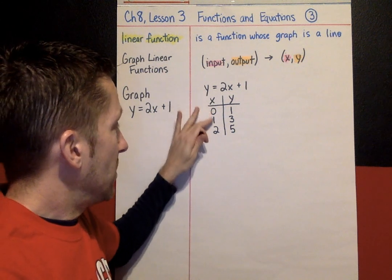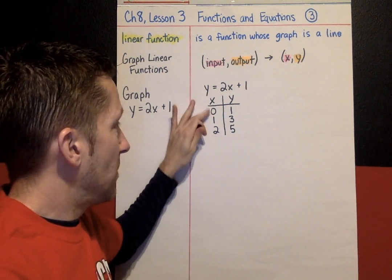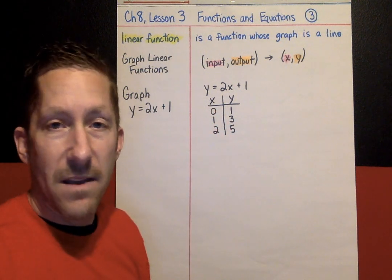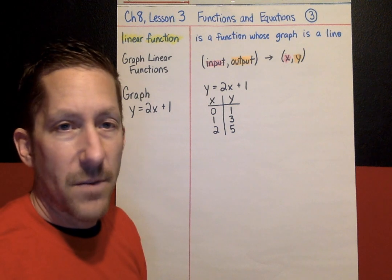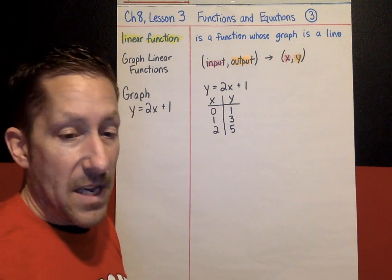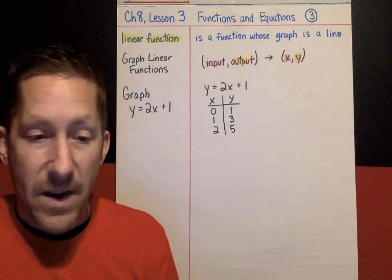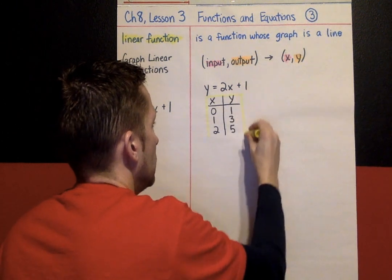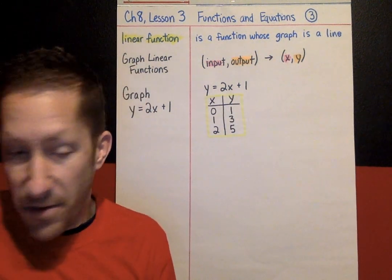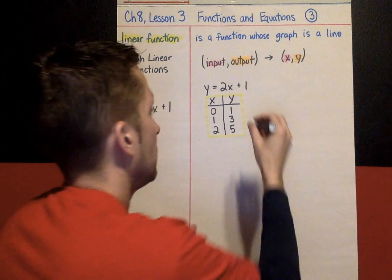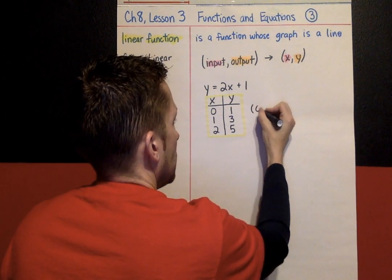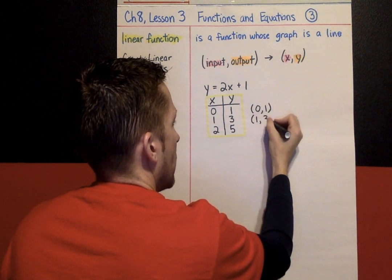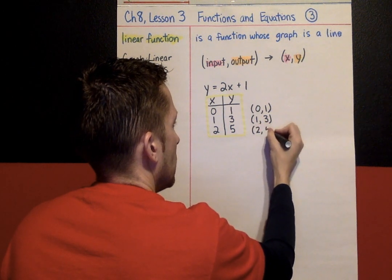And, these are good numbers to start. When you're making a table, make your x value 0, 1, 2, 3. Just start with those numbers and see what happens. See what you get. So, these, right here, the table, now turns into x and y values. So, this turns into 0, 1, ordered pair 1, 3, and 2, 5.